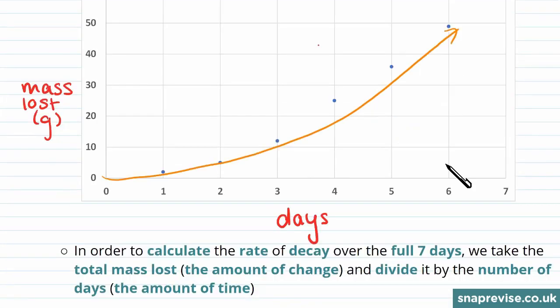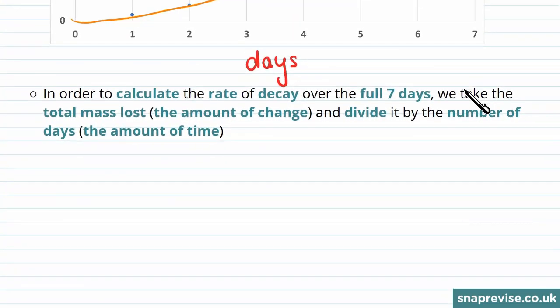In order to calculate the rate of decay over the full seven days, we take the total mass loss - the amount of change - and divide it by the number of days, which is the amount of time.